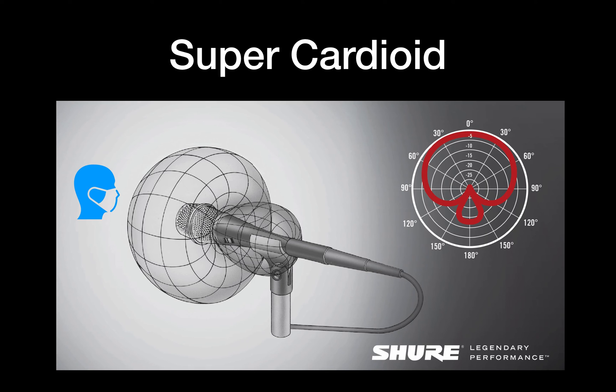I'm going to talk about one more type, and that's called super cardioid. So it's like a cardioid, only it's angled more towards the center. It does accept some sound from the back, but it has two rejection points at 150 degrees. That means it's not very good at picking up sound from 150 degrees.